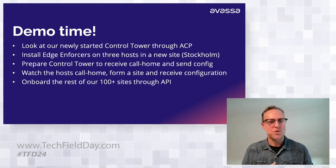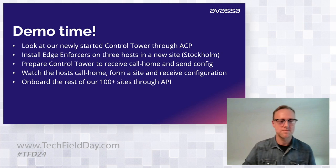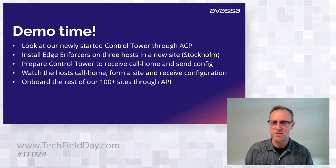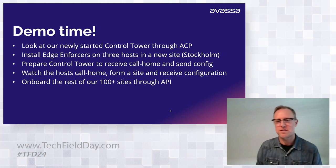Here's what's going to happen: we're going to look at our newly started Control Tower through ACP, install edge enforcers on three hosts as we create the new Stockholm site, prepare the Control Tower to receive call-home and send config to the newly arrived sites. We'll watch the call-home in terminals, and eventually onboard the rest of our 100-plus sites through the API using a script from our inventory team.